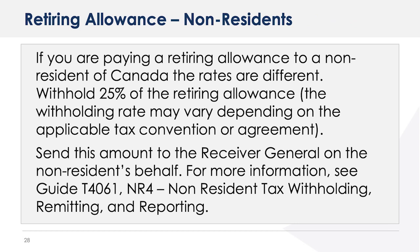If you are paying a retiring allowance to a non-resident of Canada, the rates are different. Withhold 25% of the retiring allowance. The withholding rate may vary depending on the applicable tax convention or agreement. Send this amount to the Receiver General on the non-resident's behalf. For more information, see Guide T4061 NR4, Non-Resident Tax Withholding, Remitting and Reporting.